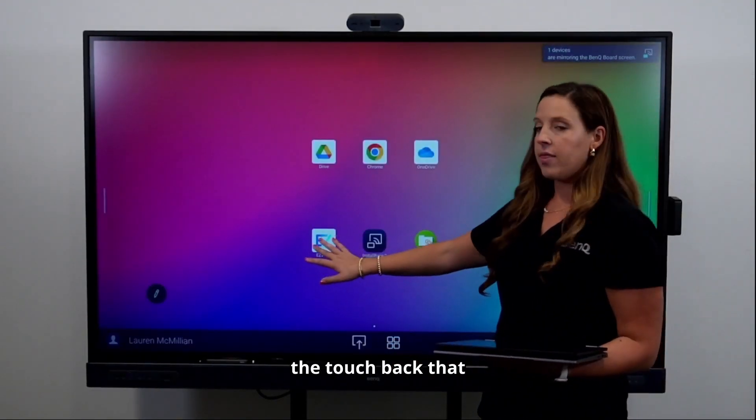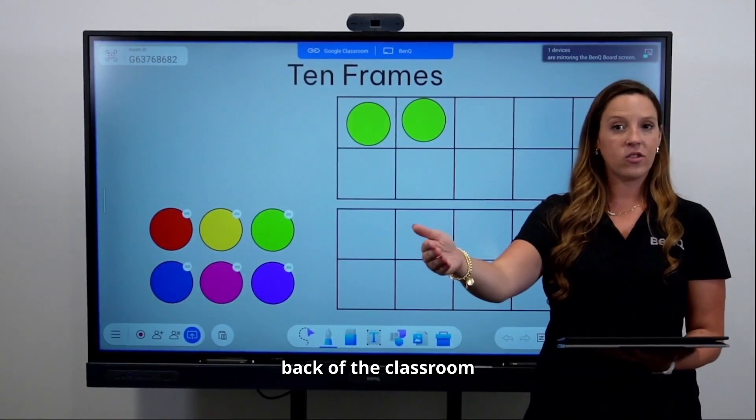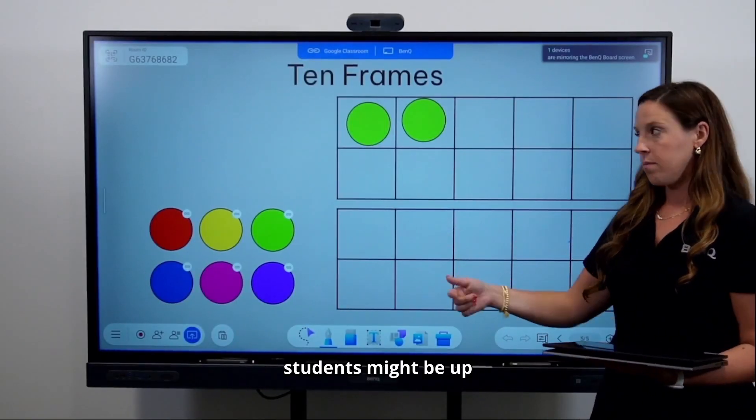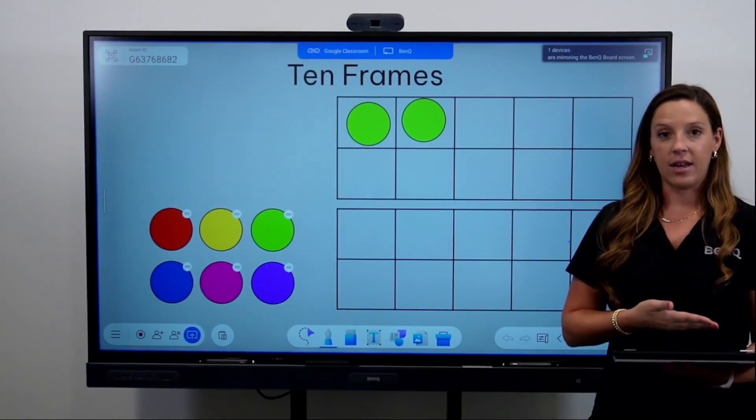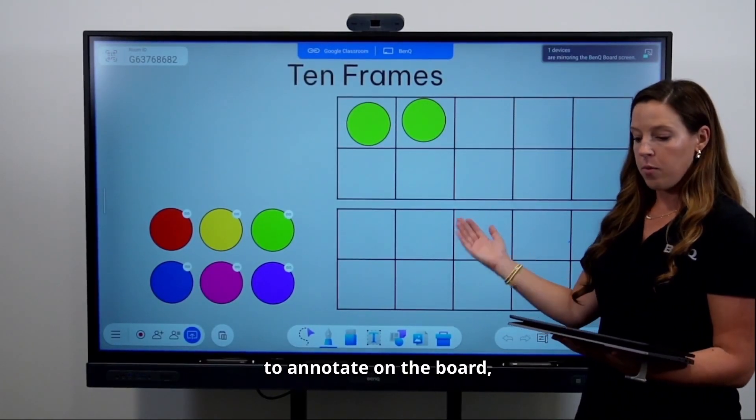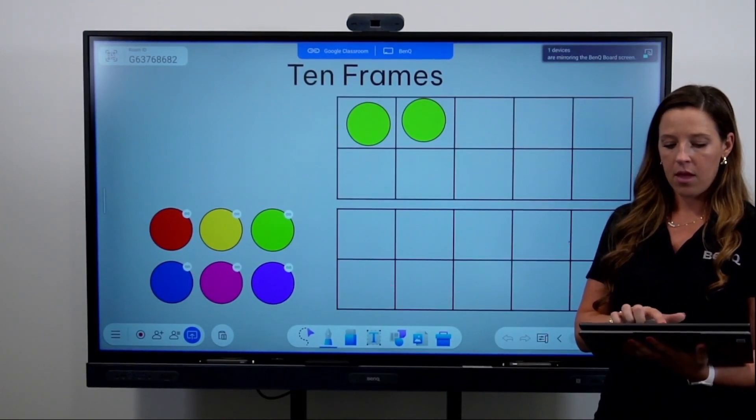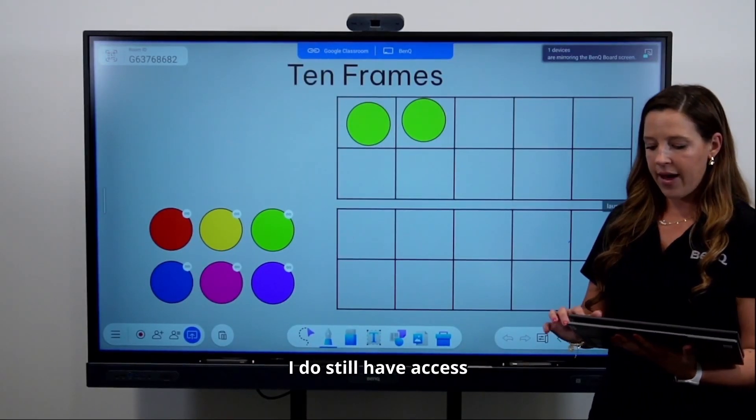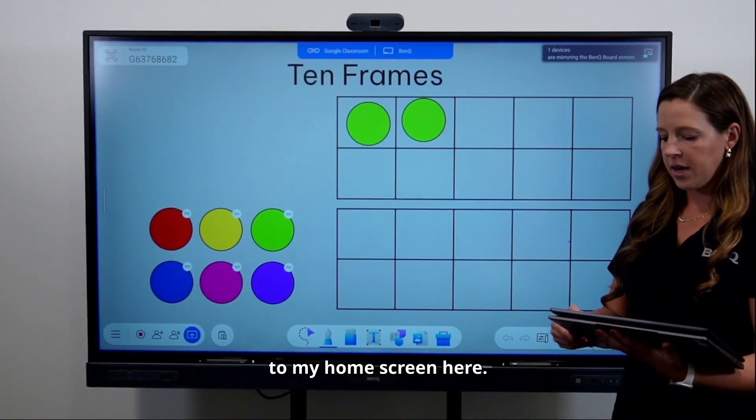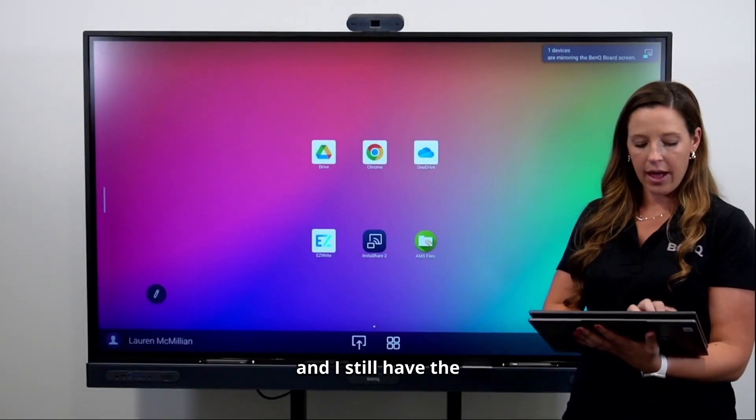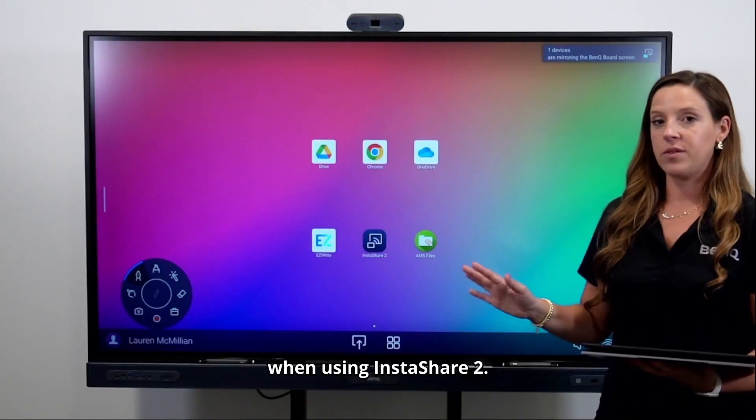This does not take away the touchback that I have on the board. I can use my device or I can use the board. So I might be in the back of the classroom running the board, but students might be up navigating this resource. You don't have to pick between one or the other. You can do both simultaneously. If I wanted to annotate on the board, I can quickly use the annotation function so I can highlight something or circle something. When I'm on the home screen, I still have access to the floating tool.